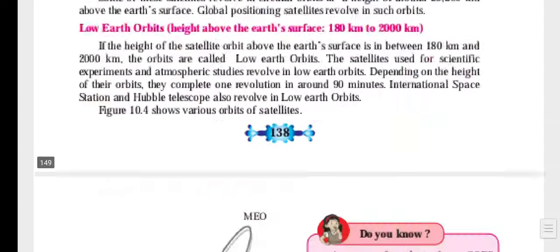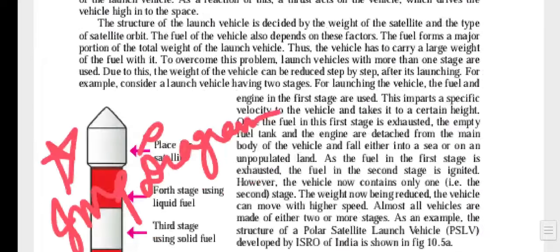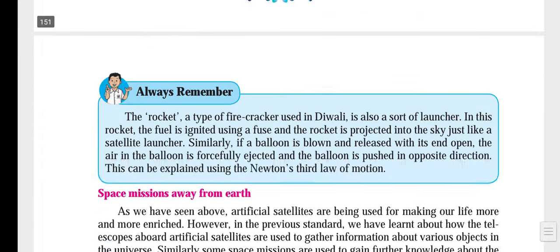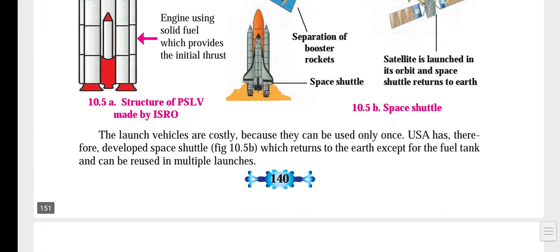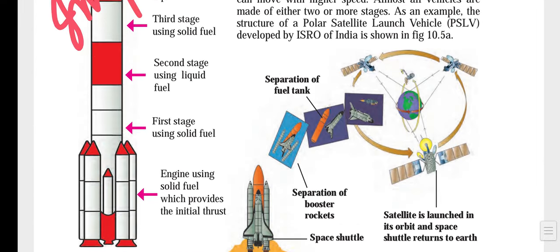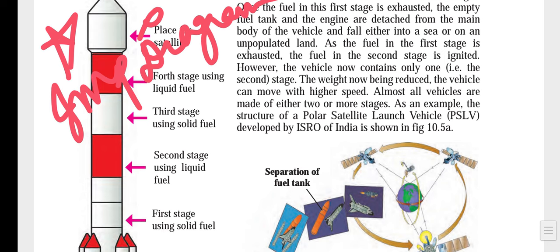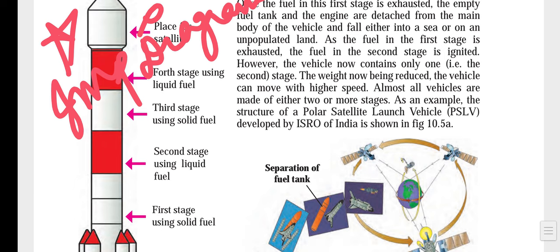When I move further ahead on page number 140 we have a big rocket diagram — the most important diagram in this chapter, because you need to understand how the rocket goes up.